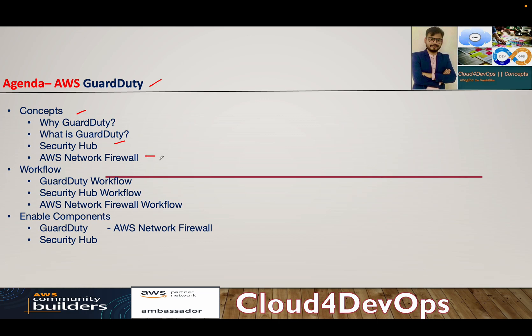AWS Network Firewall — we will not talk much from the practical perspective, but I will tell you the conceptual part. This is another important firewall service which acts as an IPS, which is an intrusion prevention system, to help us protect our environment. Once the concept is done, we will understand the GuardDuty workflow, Security Hub workflow, and Network Firewall as well.